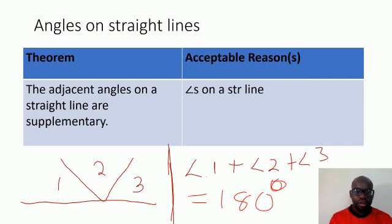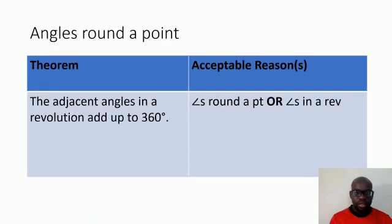The acceptable reason when you use this theorem is angles on a straight line. If you see the example that I gave down here, we have three angles: angle 1, angle 2, and angle 3. Therefore, angle 1 plus angle 2 plus angle 3 equals 180 degrees. Why? They are adjacent angles on a straight line.